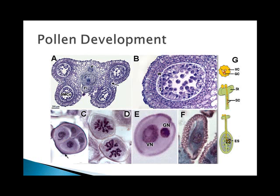Pollen grains develop in the anthers of the stamens. Pollen has durable outer coatings that withstand inhospitable conditions and prevent drying out. The formation of pollen follows these steps: in sporangial chambers of the anther, diploid microsporocytes undergo meiosis producing four haploid cells. Haploid microspores then undergo mitotic division to make generative cells and tube cells. The wall of the microspore thickens, and the two cells surrounded by a thick wall become the pollen grain.